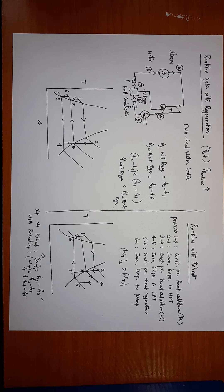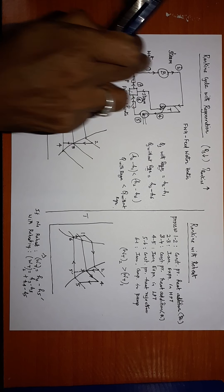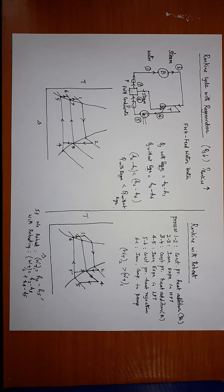I hope you have understood the concept of the basic Rankine cycle, Rankine cycle with reheat, and Rankine cycle with regeneration. In the reheat cycle we increased the turbine work to improve efficiency. In the regeneration cycle we reduced the heat supply in the boiler by recovering heat from partially expanded steam to preheat the feed water before it enters the boiler. With this I will stop this lecture and we will continue in the next video. Thank you.